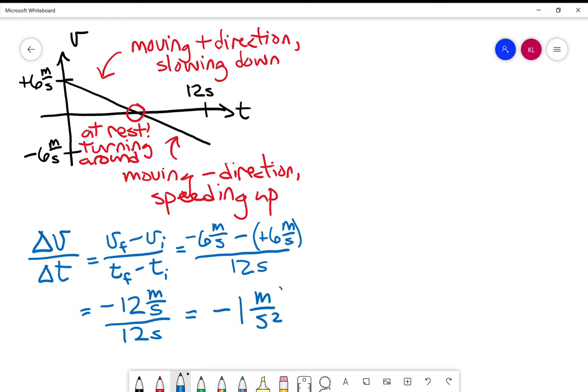This slope is also known as the acceleration. Acceleration is just the change in the velocity per time interval, and so it has units of velocity per time, or meters per second squared.